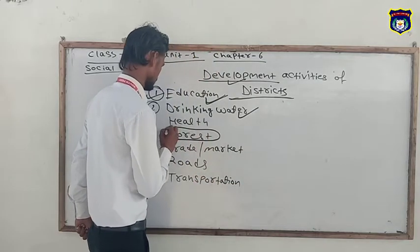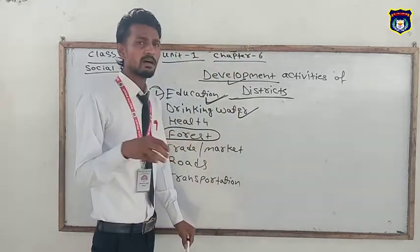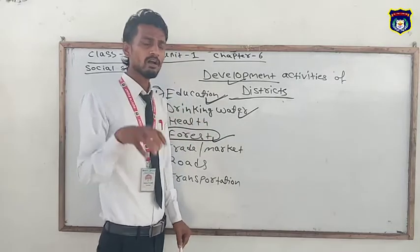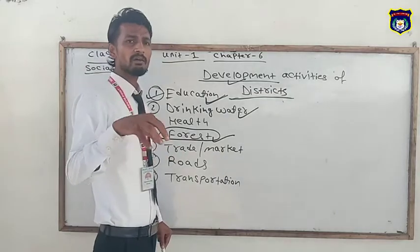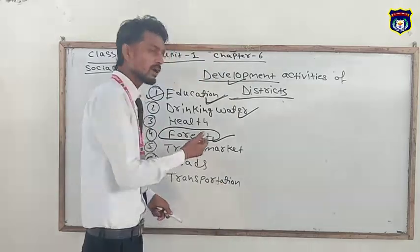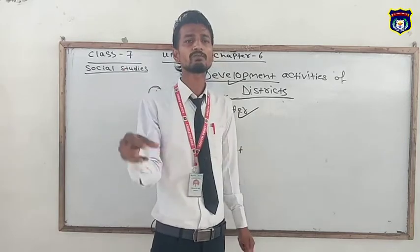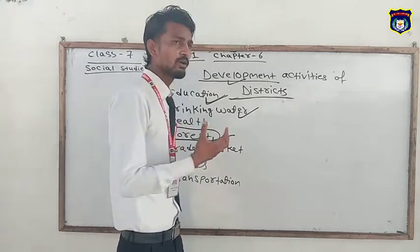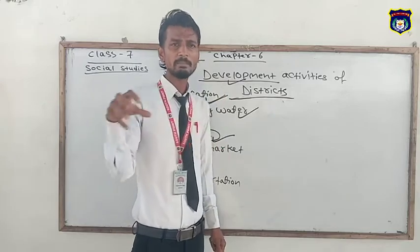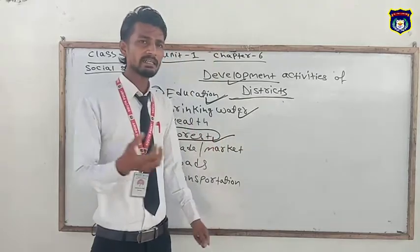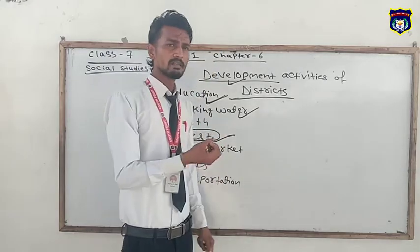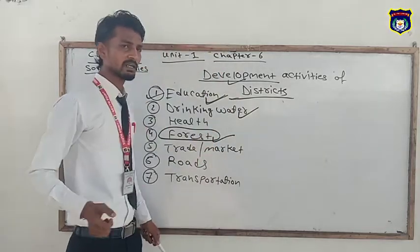Next one is the forest area. In Nepal, we say 'Haryo Ban, Nepal Ko Dhan' — green forests are Nepal's wealth. These forests make our country famous all over the world. About 50% of Nepal's area is covered in forest. We get different things from forests — wood, herbs, and different types of fruits. The forest is also a habitat for wild animals. All 77 districts of Nepal have some amount of forest area, and they must conserve it. Different national parks and conservation areas have been established by the government of Nepal to protect these areas, and districts are also working to protect and develop their forest areas.